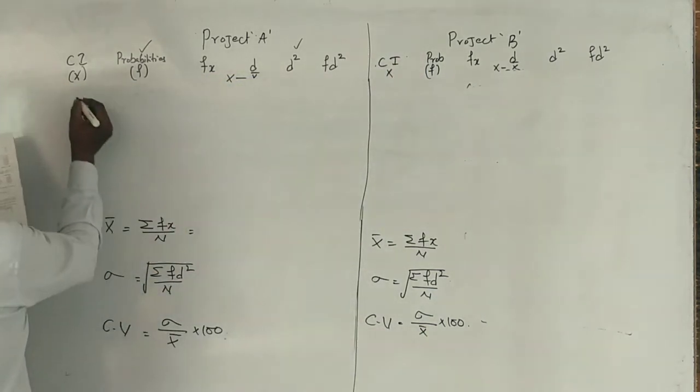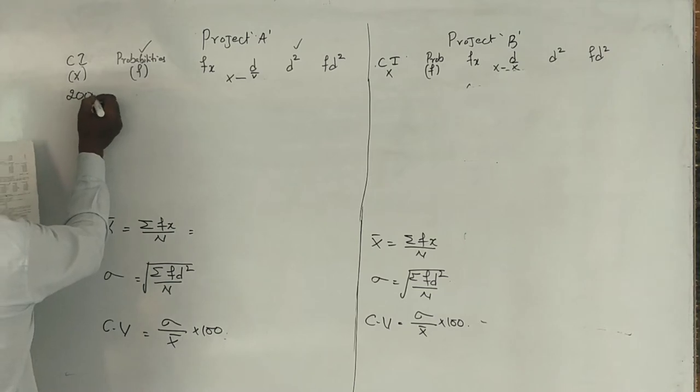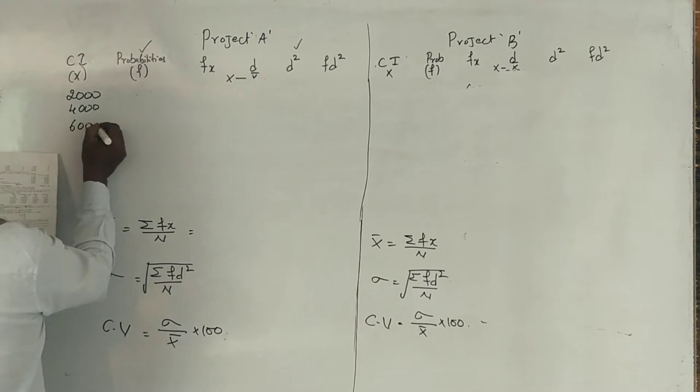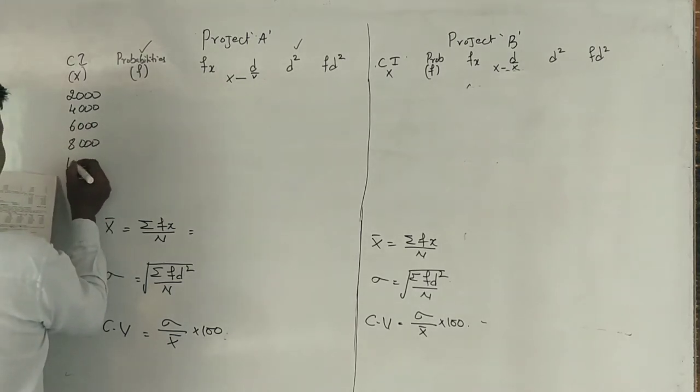Project A cash inflows: first year 2000, second year 4000, 6000, 8000, 10,000.